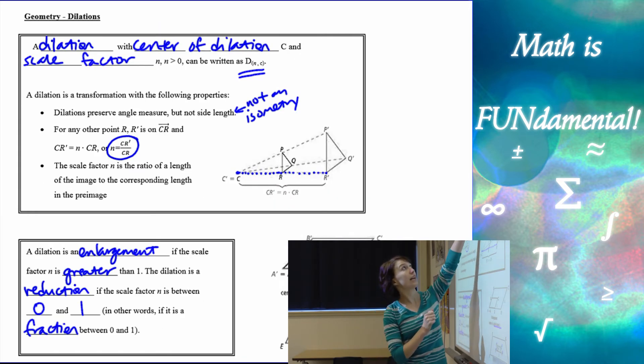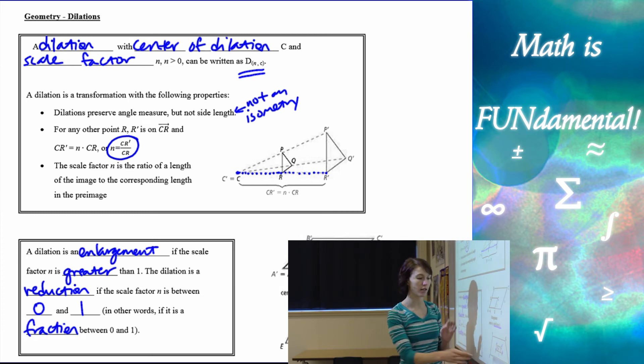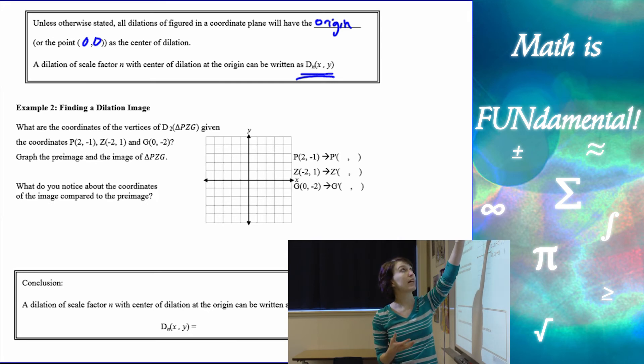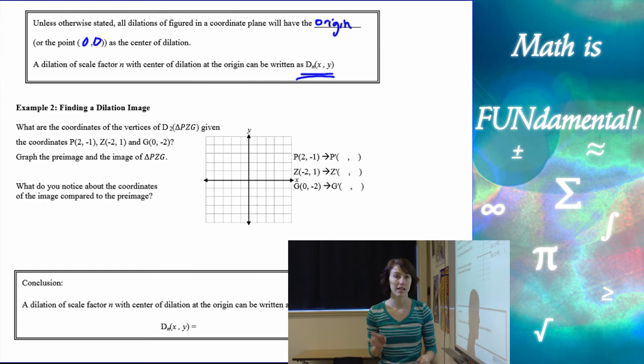the difference is here we had D, we had parentheses N, C, where C was our center of dilation. Here, we just have an N. There is no comma C because we're just going to assume, if it's not stated, that our center of dilation is the origin.